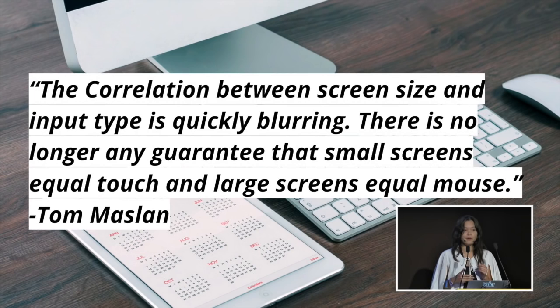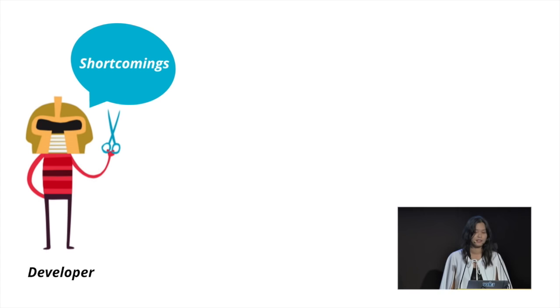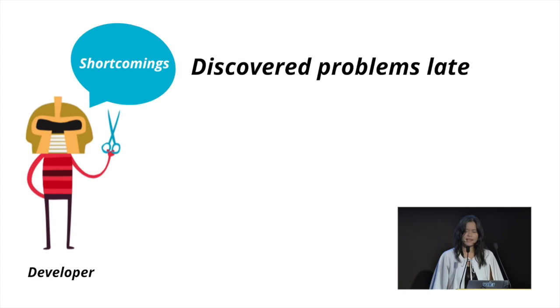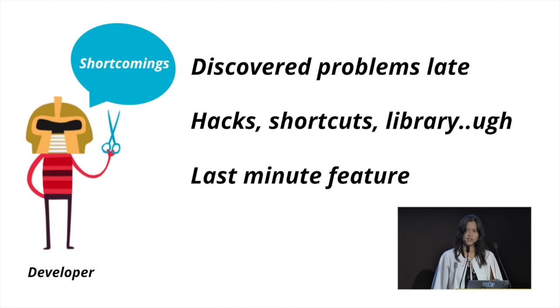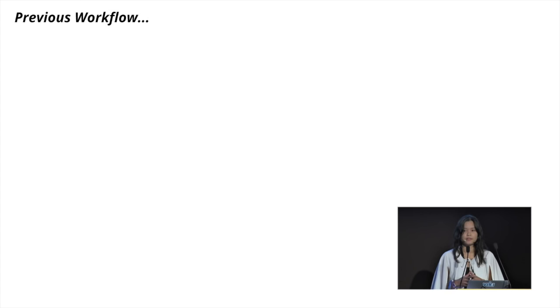The third reason is shortcomings. Design shortcomings are discovered really late — in our case, always during the development stage. This is when you start thinking about employing different kinds of hacks, shortcuts, and libraries, which is not healthy for your code climate if you make it a habit. Also, if there's any last-minute feature you forgot to include, you won't be able to squeeze it in.